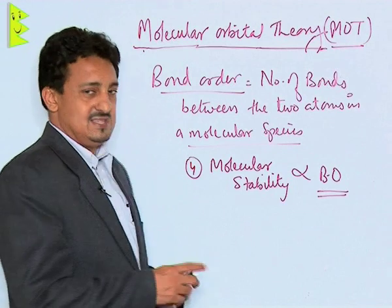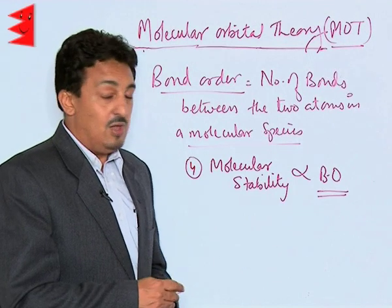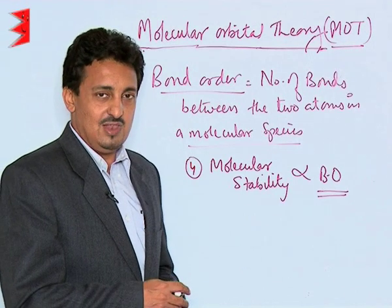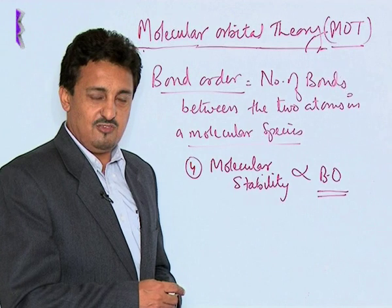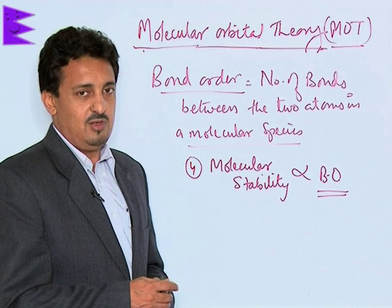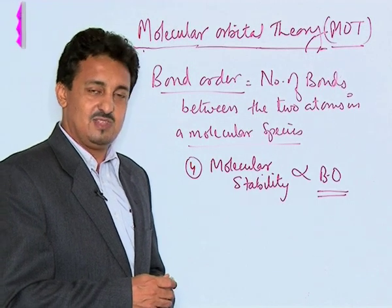After understanding this, let us now move to the molecular diagrams and the molecular electronic configuration of the homonuclear diatomic molecular species, as explained by Molecular Orbital Theory (MOT).